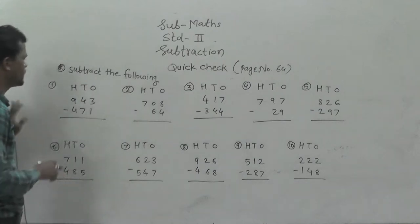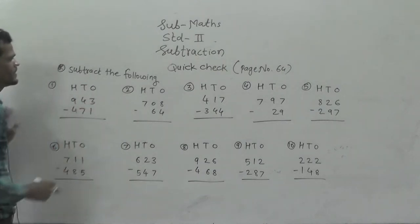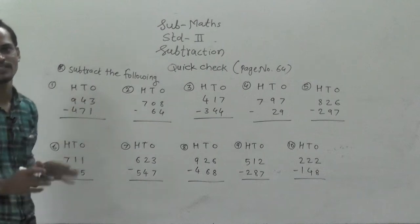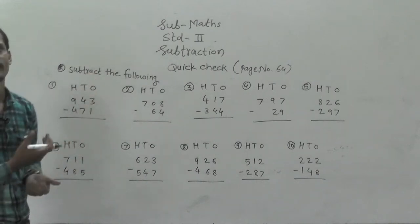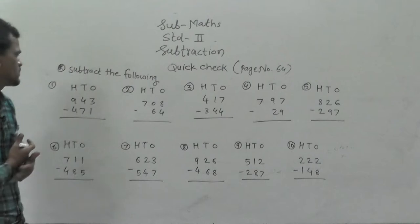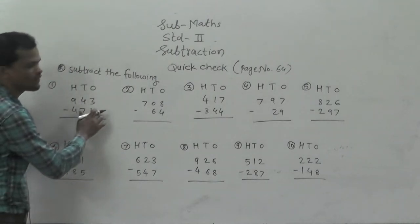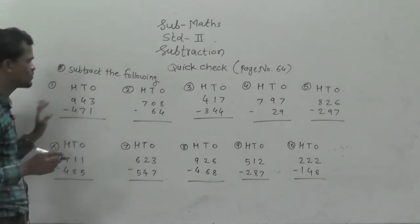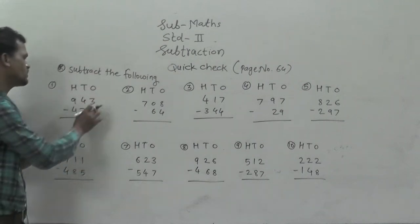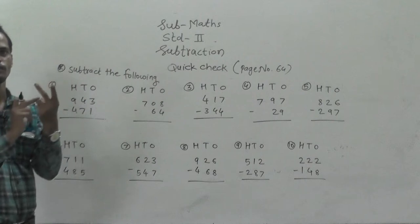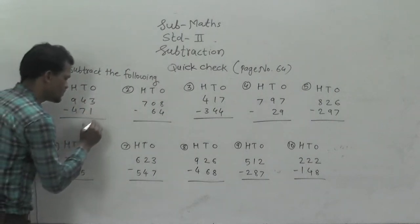Now first example: 943 minus 471. These all examples are based on subtraction — we have to find out the difference. Always you have to start from the ones place. So 3 minus 1 means 2.